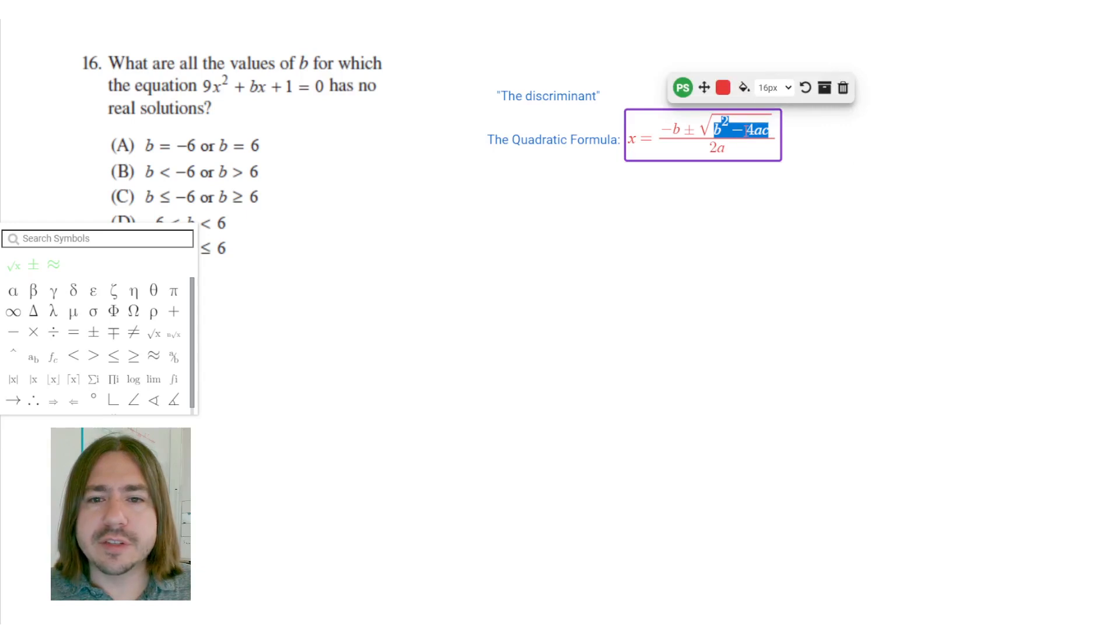However, if this number is 0, and so we end up with plus or minus the square root of 0, whether you add 0 or subtract 0, it's not going to make a difference. So in both of those cases, you'd end up getting the same number. And so when this number right here is 0, then you would just get one unique real solution.